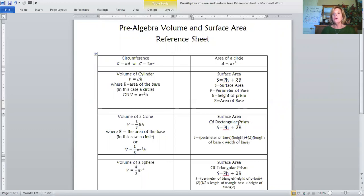So we talked about surface area of a rectangular prism. Formula is the same. So surface area is the perimeter of the base times the height plus 2 times the length times the width of the base.